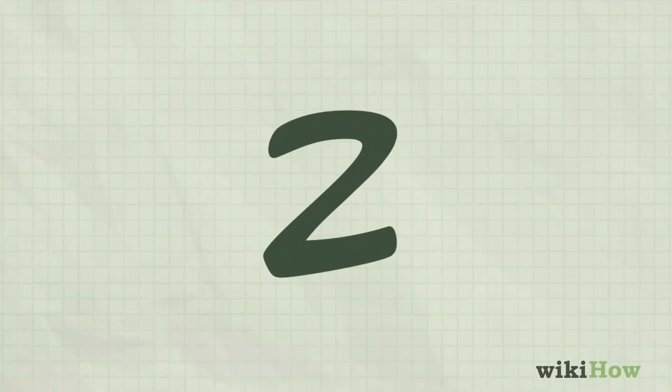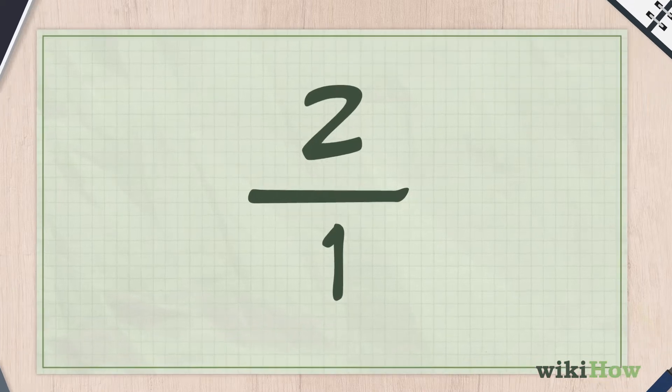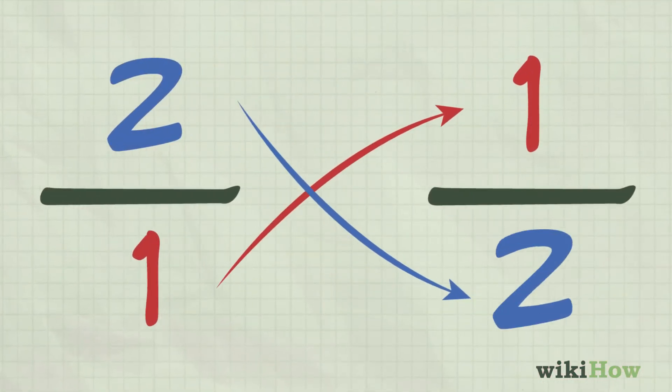For instance, to find the reciprocal of 2, turn it into the improper fraction of 2 over 1, then invert it to get 1 over 2.